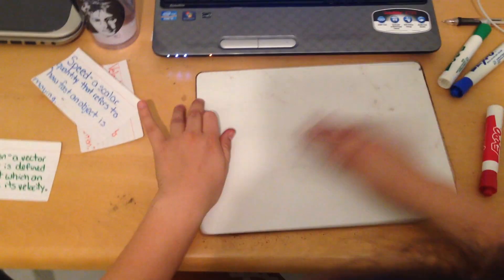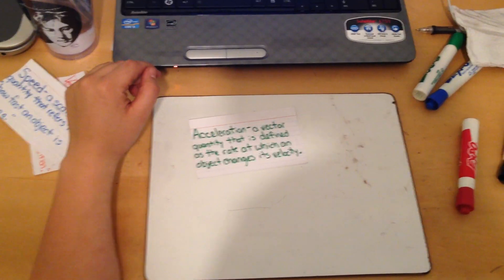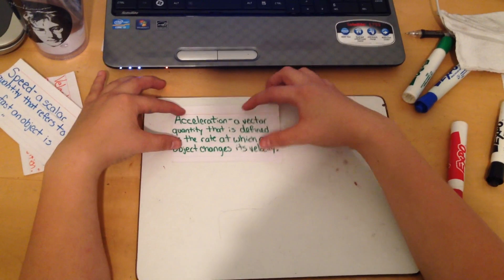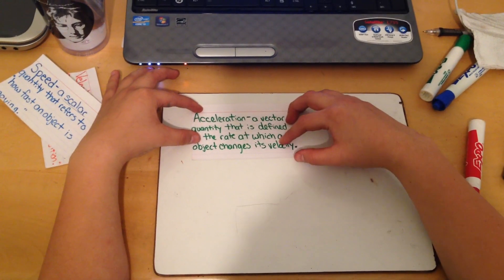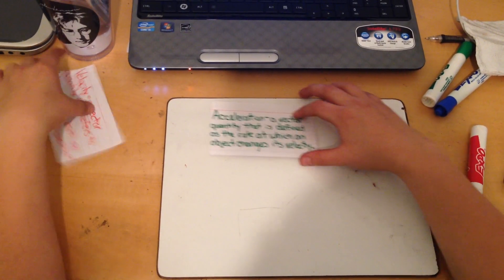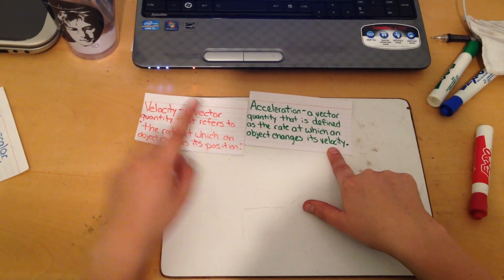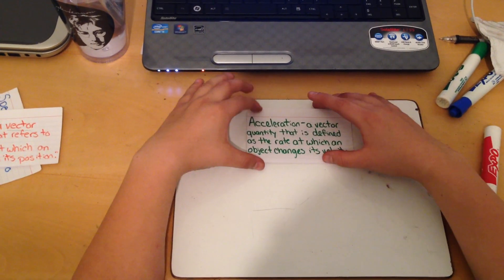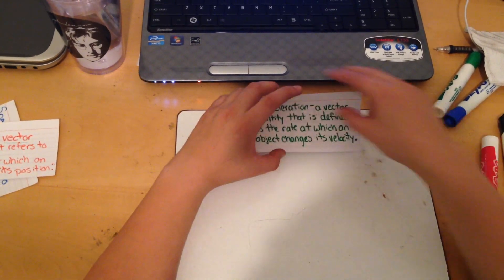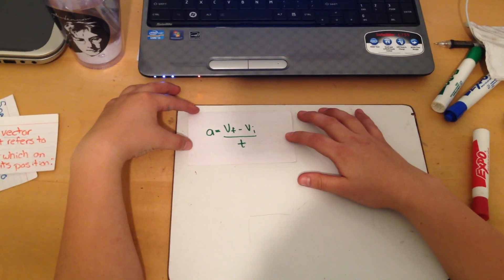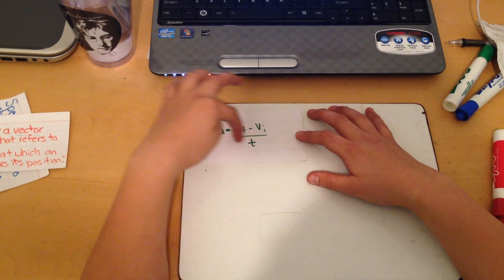The reason you won't arrive at exactly the calculated time is because of the next concept: acceleration. Acceleration is a vector quantity defined as the rate at which an object changes in velocity — similar to velocity, but what changes here is velocity, not position. The formula for acceleration is: acceleration equals final velocity minus initial velocity, divided by time.